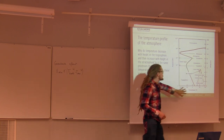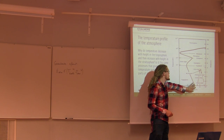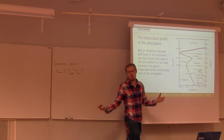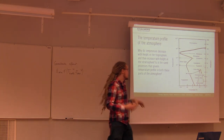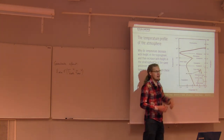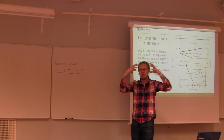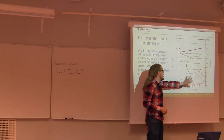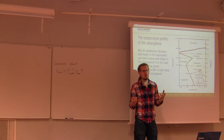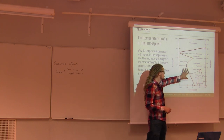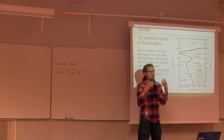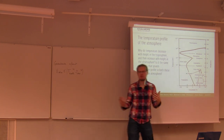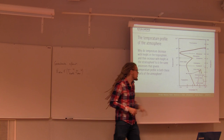So what we talked about yesterday was what determines the lapse rate of the temperature profile of the troposphere. Pressure is decreasing with height, so as air moves up it expands and cools down. But that also releases water drops — condensing water, which releases heat. The net effect is this lapse rate of 6.5 degrees Celsius per kilometer going up.